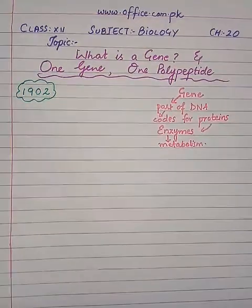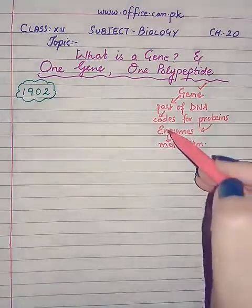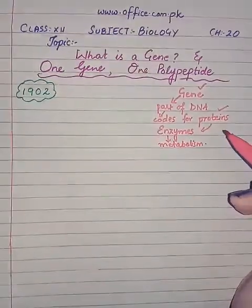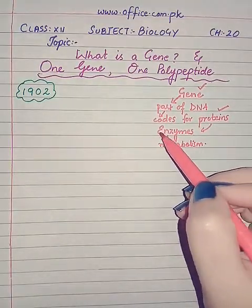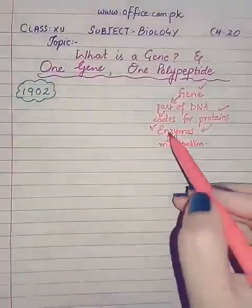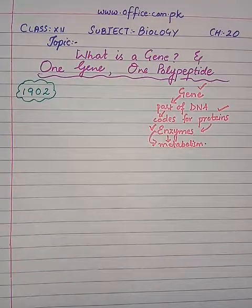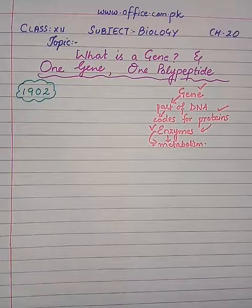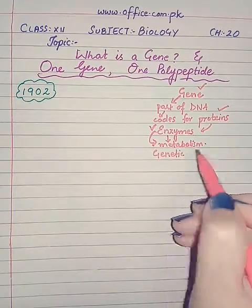Enzymes work in the normal functioning of the human body. Now if there is any kind of defect in a gene, it will ultimately affect the formation of that specific protein and ultimately the enzyme — either the enzyme will not be formed, or if it is formed by that defective gene, the enzyme will also be defective. This will negatively affect the metabolism of the human body, and that will result in certain genetic disorders or genetic diseases.